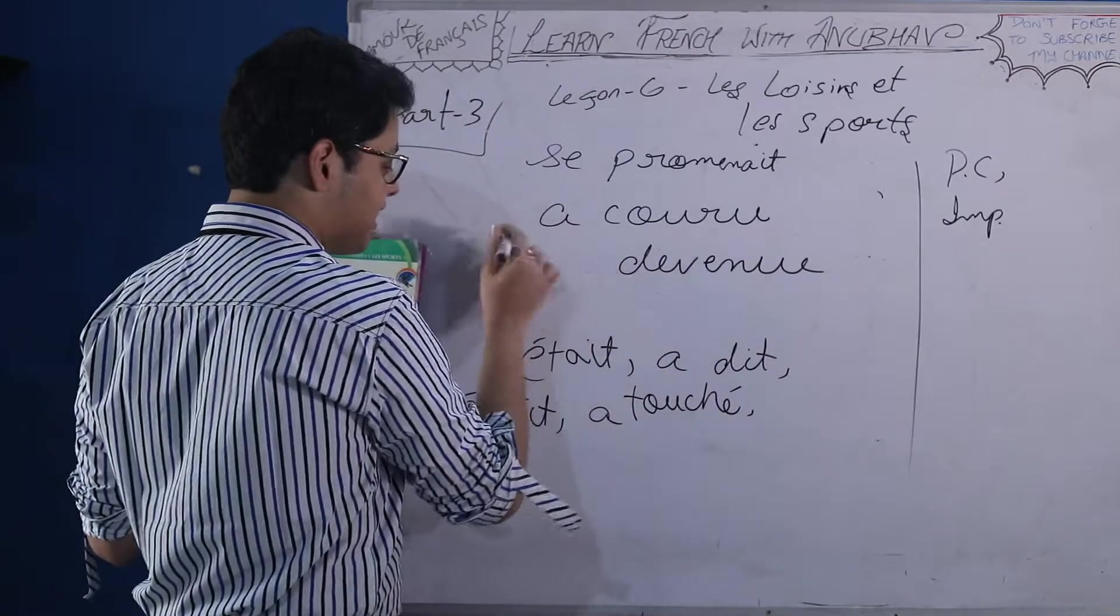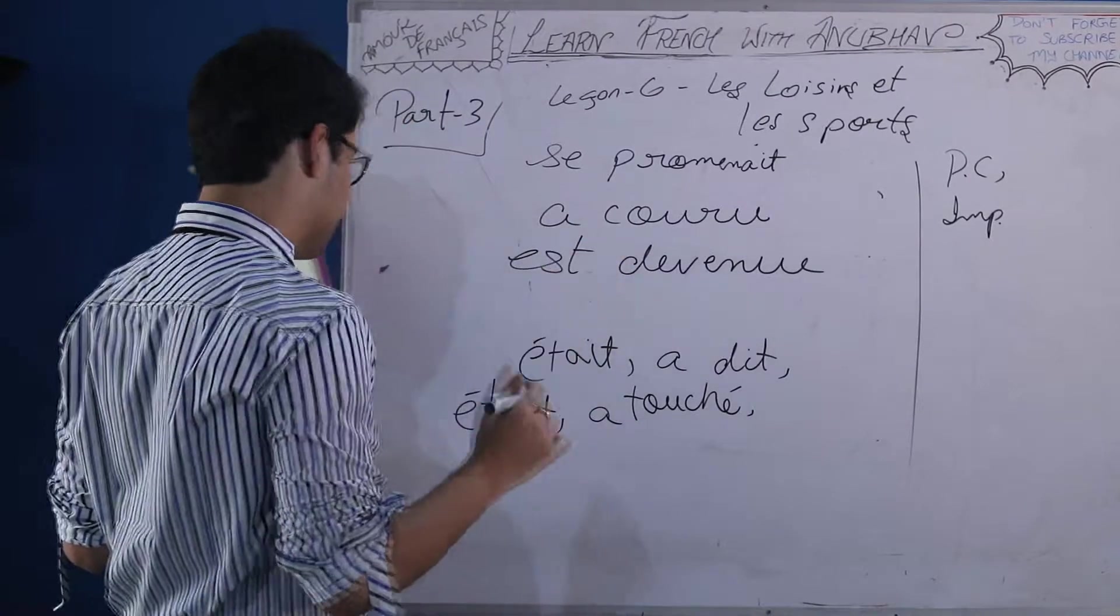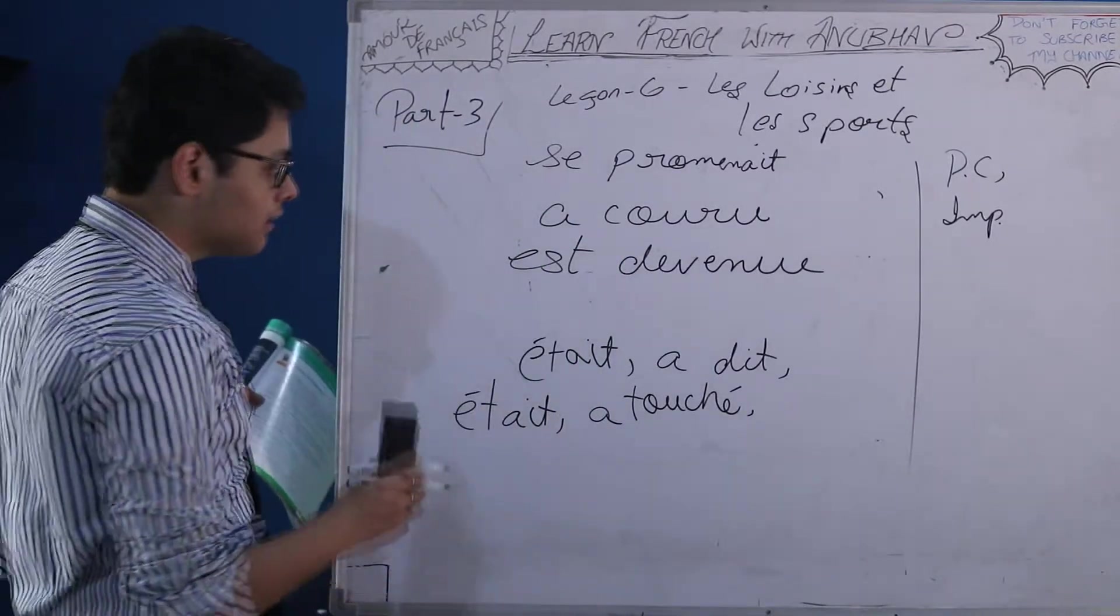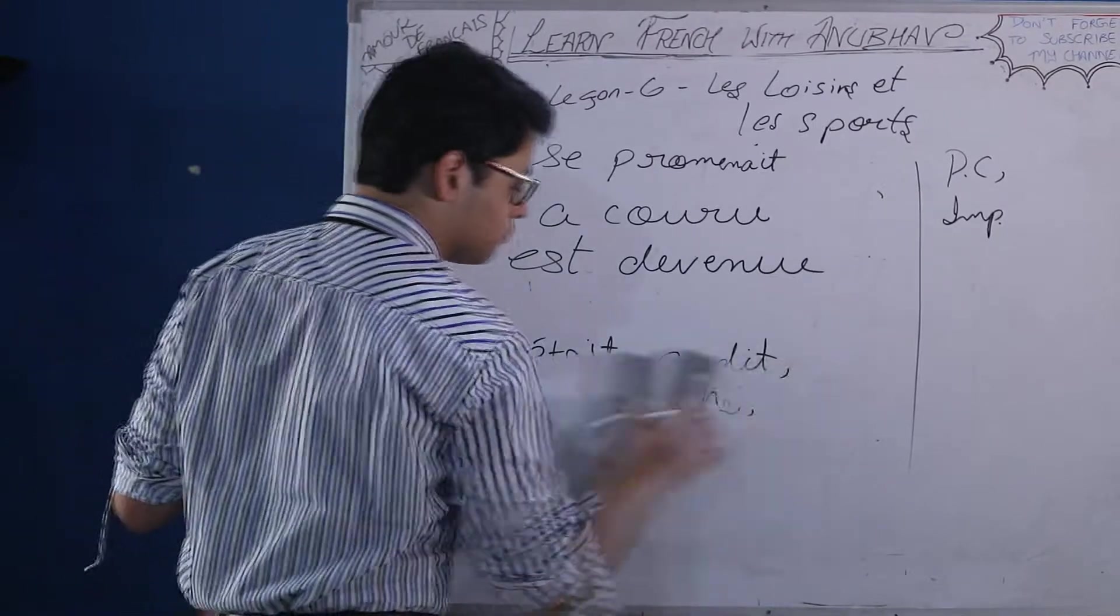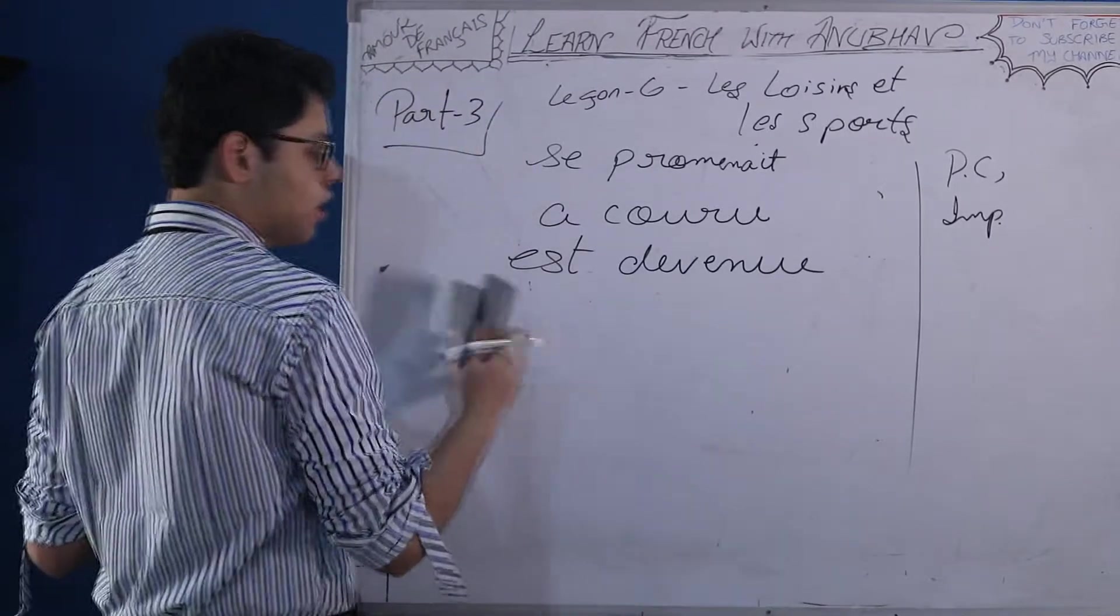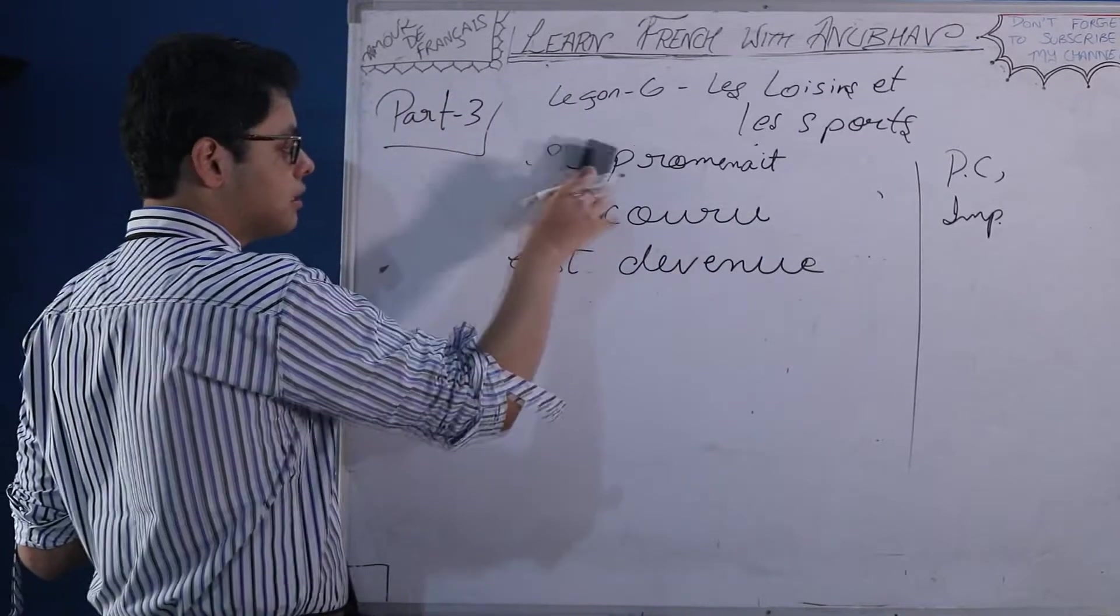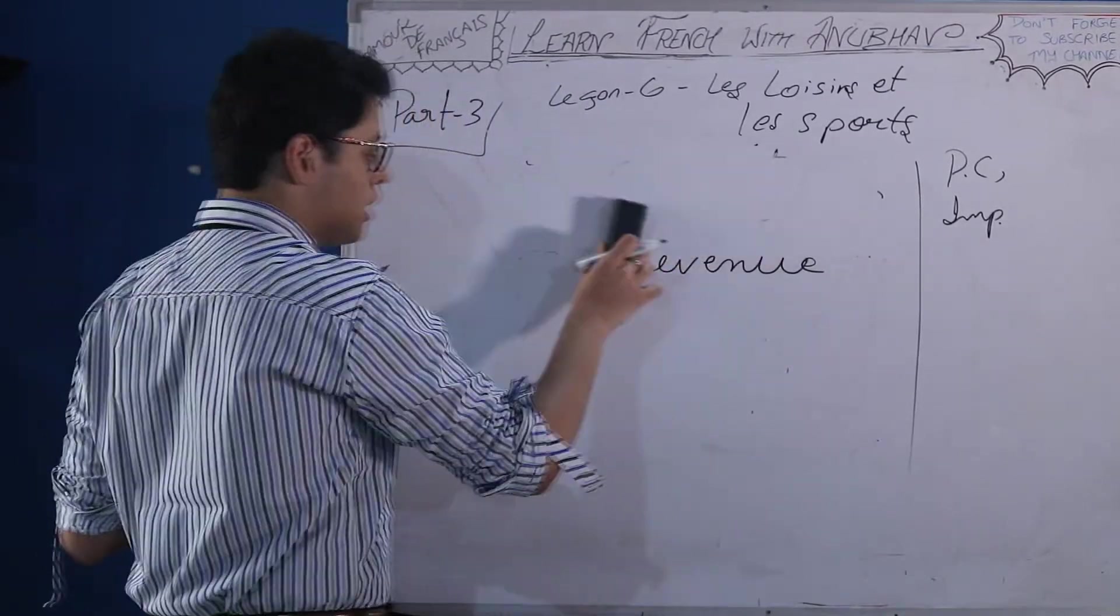Oh, sorry. Devenue to become is with etre. And it's done. Moving towards question number two. A devenue. Notice extra e. Because the princess is a girl. And we have to follow the agreement.